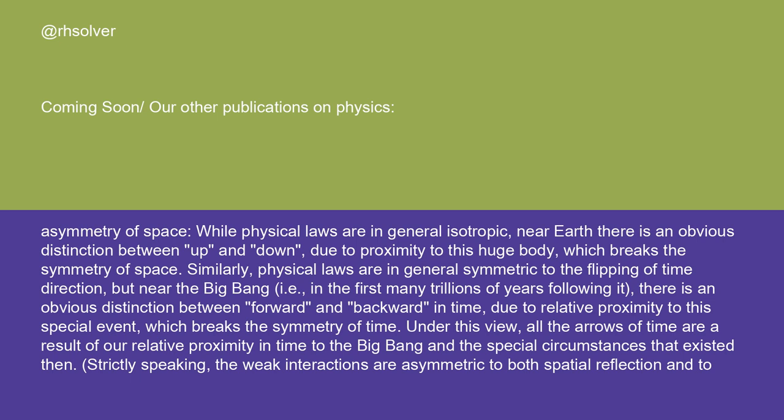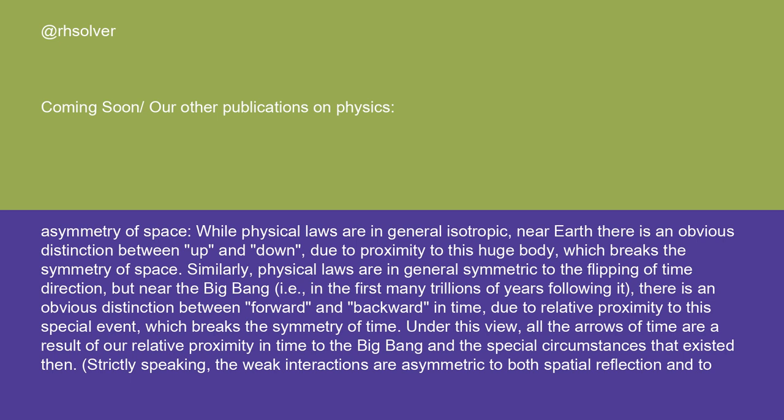Under this view, all the arrows of time are a result of our relative proximity in time to the Big Bang and the special circumstances that existed then. Strictly speaking, the weak interactions are asymmetric to both spatial reflection and to flipping of the time direction. However, they do obey a more complicated symmetry that includes both.